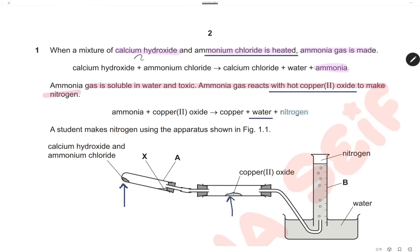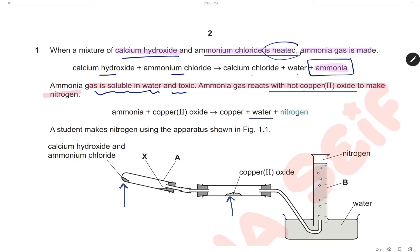Question 1. When a mixture of calcium hydroxide and ammonium chloride is heated, ammonia gas is made. As we can see from the equation, calcium hydroxide reacts with ammonium chloride to form calcium chloride, water, and ammonia gas. Ammonia gas is soluble in water and it is toxic. Ammonia gas reacts with hot copper(II) oxide to make nitrogen gas. So first we will react calcium hydroxide and ammonium chloride to produce ammonia, then we will react ammonia with copper(II) oxide to produce nitrogen.